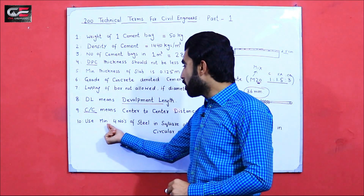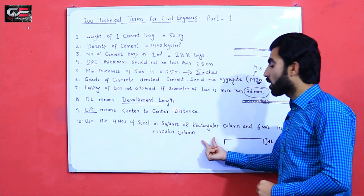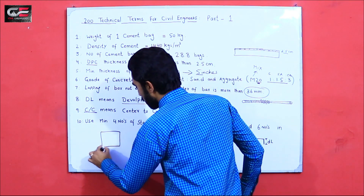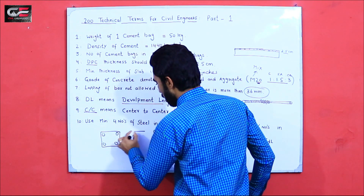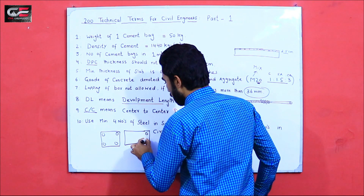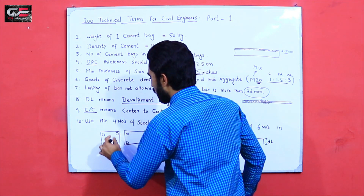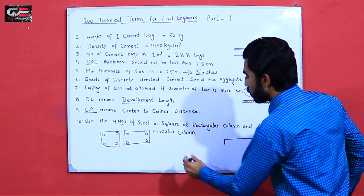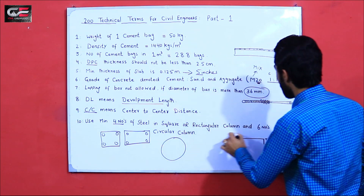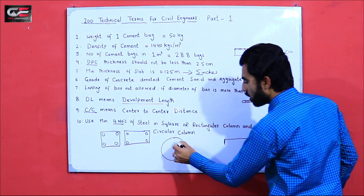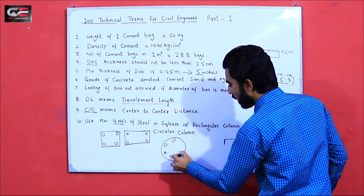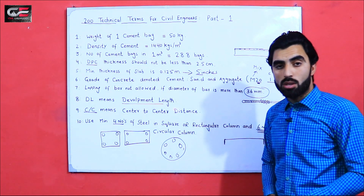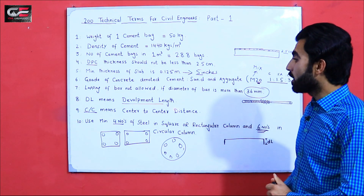The tenth term is about the minimum number of steel bars in columns. Use a minimum of four steel bars in a square or rectangular column — we should not use less than four bars in rectangular or square columns. For a circular column, use a minimum of six steel bars: one, two, three, four, five, six — minimum six bars in a circular column.